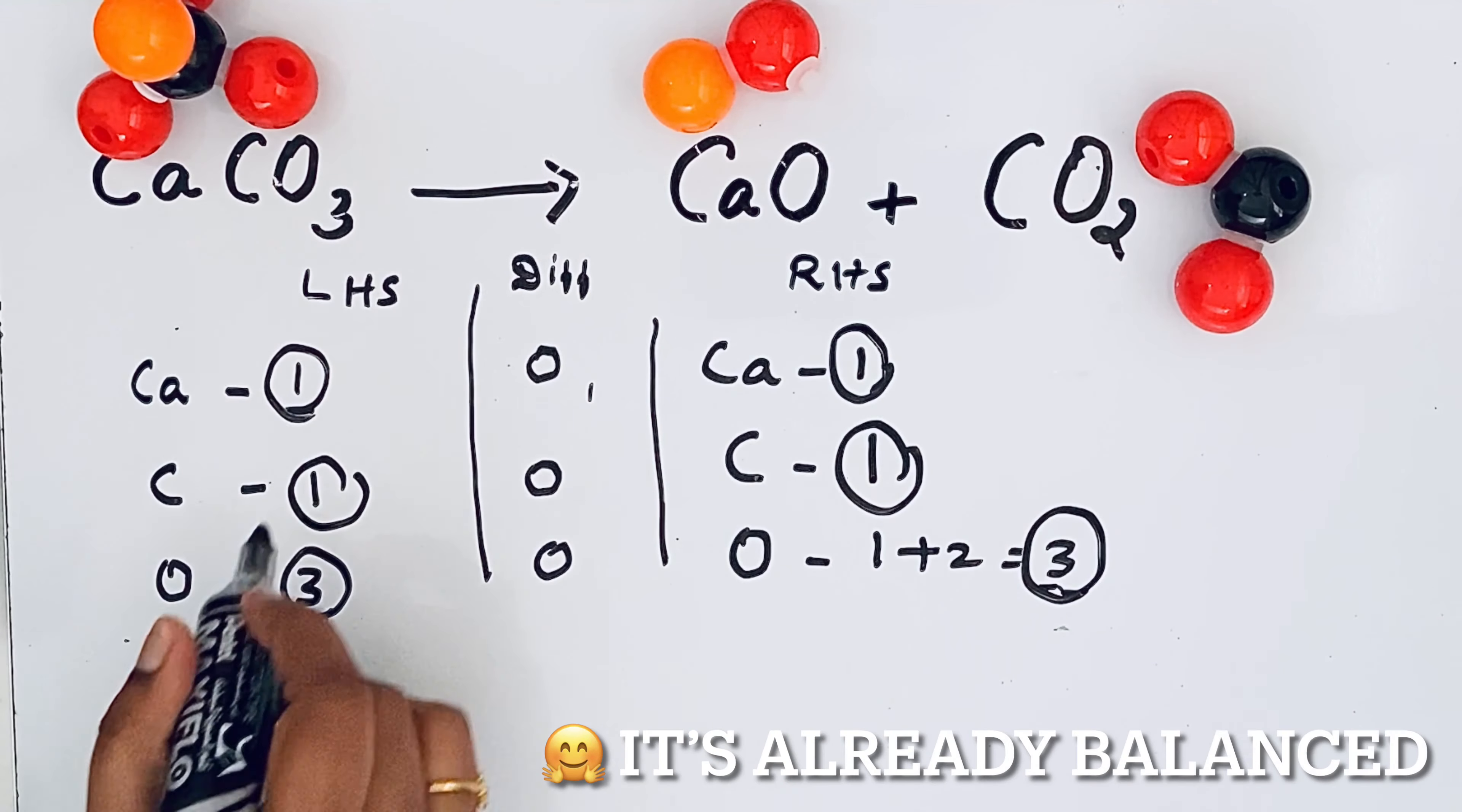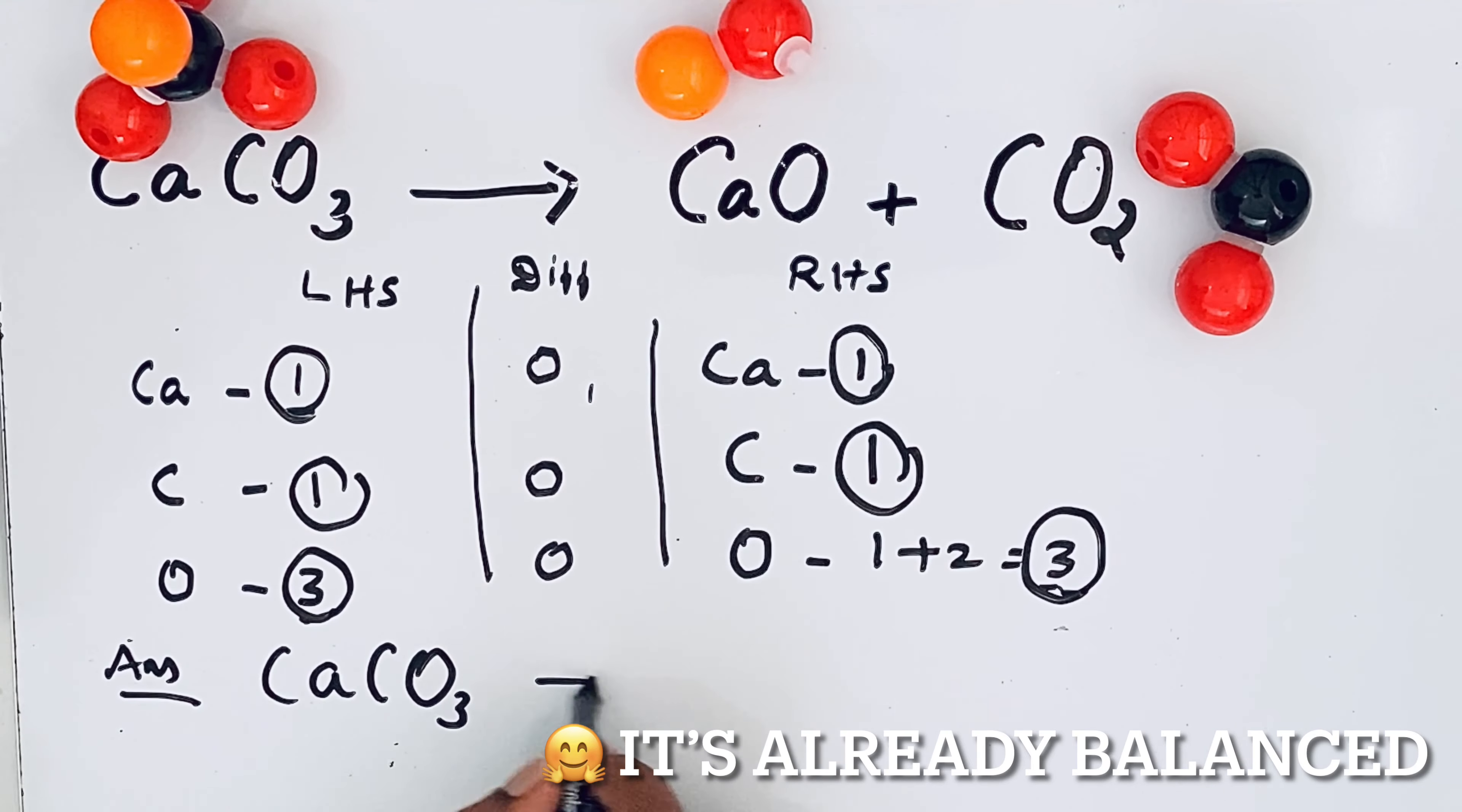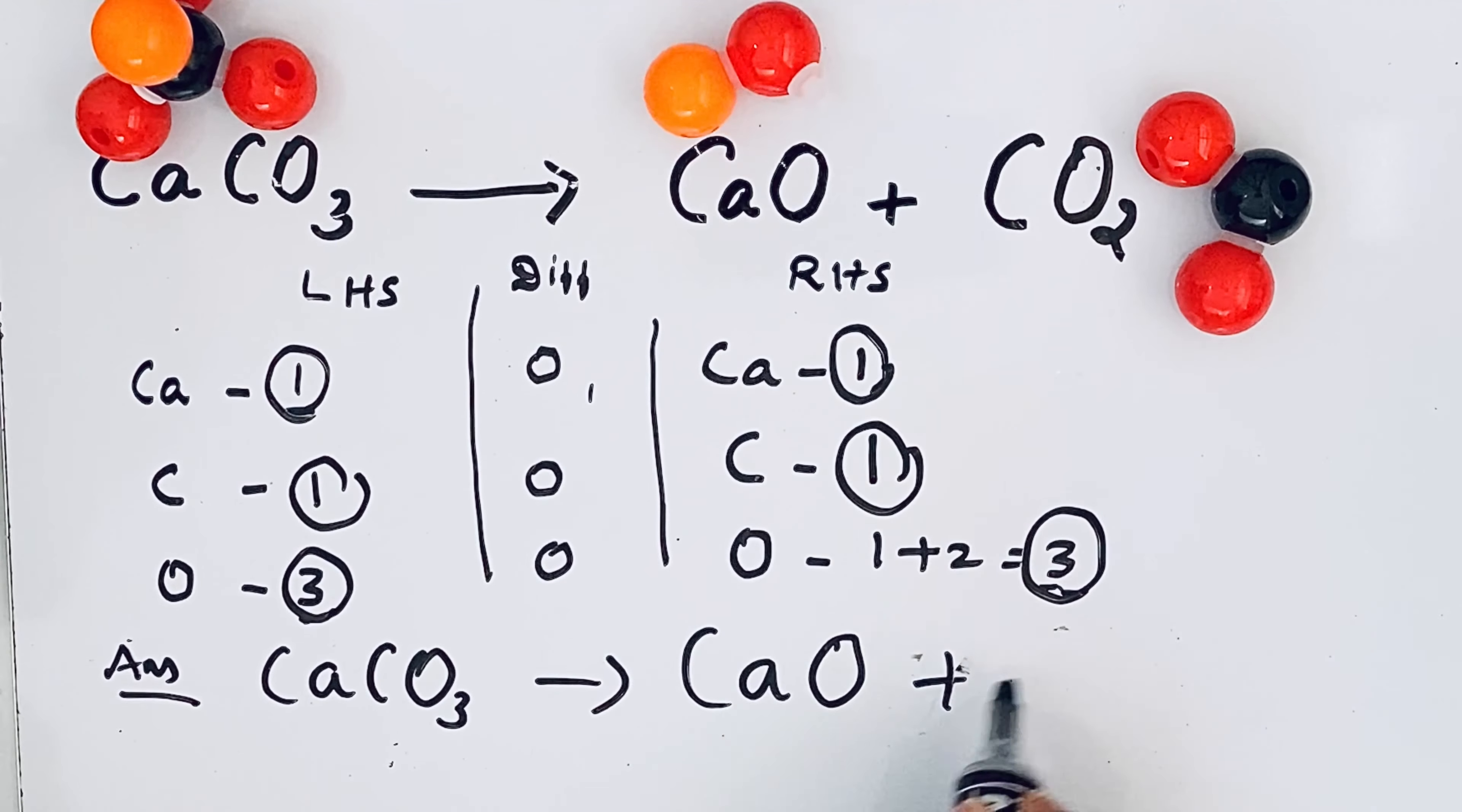So the balanced reaction is the original reaction itself. CaCO3 gives CaO plus CO2 carbon dioxide.